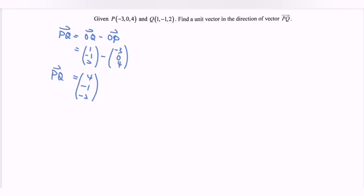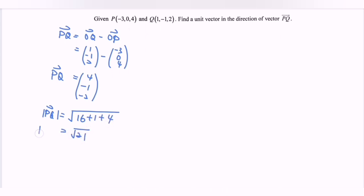Next, find the magnitude of PQ. We have the square root of 16 plus 1 plus 4, which gives us the square root of 21 for the magnitude of PQ.